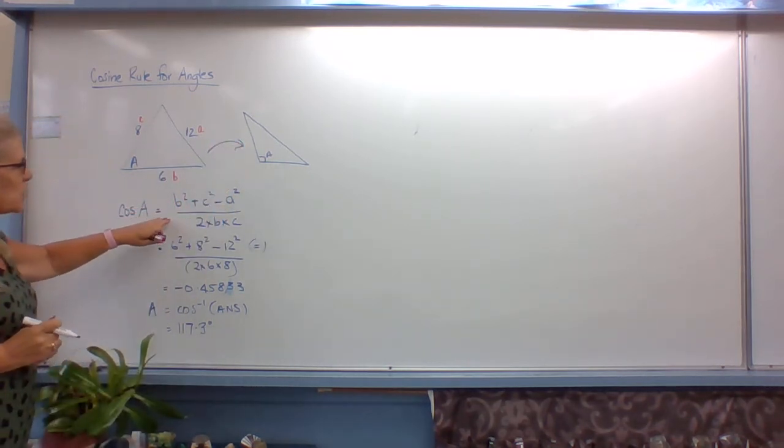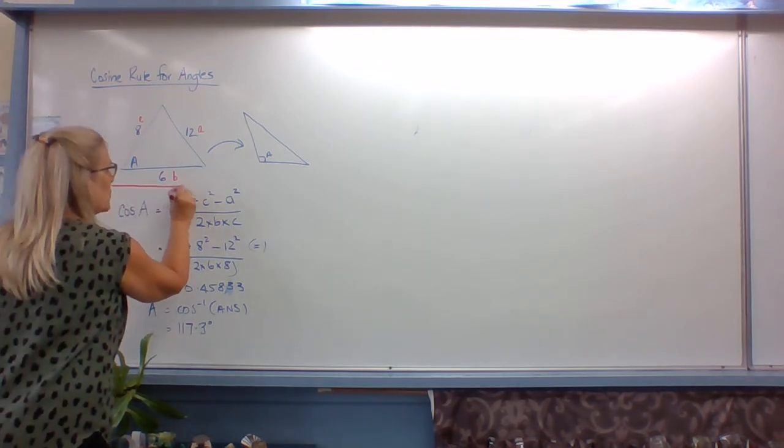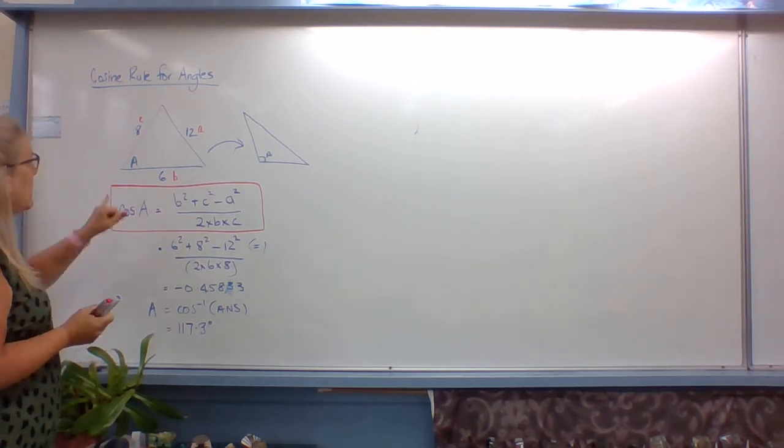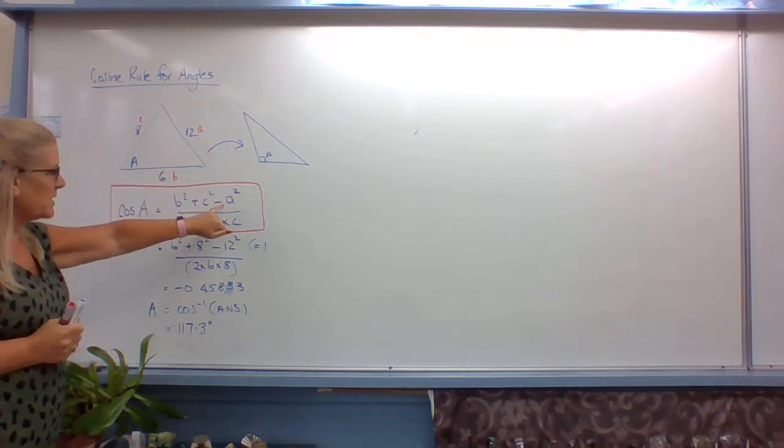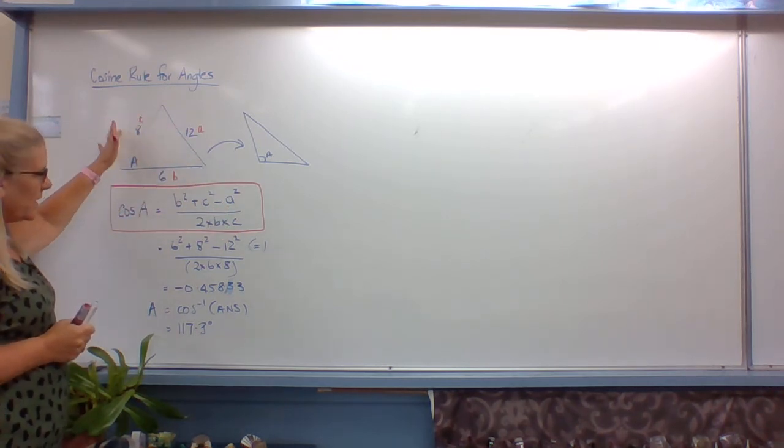So you have to make sure that you're using this formula off your formula sheet. Make sure you copy it down correctly. The side opposite must be A squared. Otherwise you can label the other two whichever way you like.